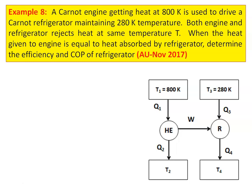All the problems we solve in the lectures are taken from the Anna University question paper. This is from the November 2017 question paper, example number 18. A Carnot engine getting heat at 800 Kelvin is used to drive a Carnot refrigerator maintaining 280 Kelvin temperature. Both the engine and the refrigerator reject heat to the same temperature T. When the heat given to the engine equals the heat absorbed by the refrigerator, determine the efficiency and COP of the refrigerator.